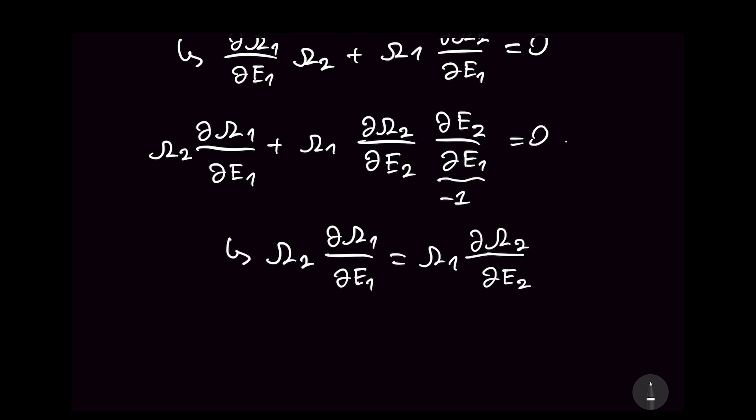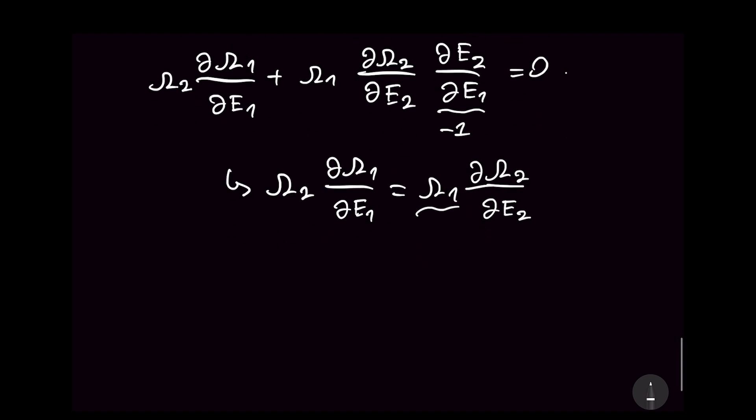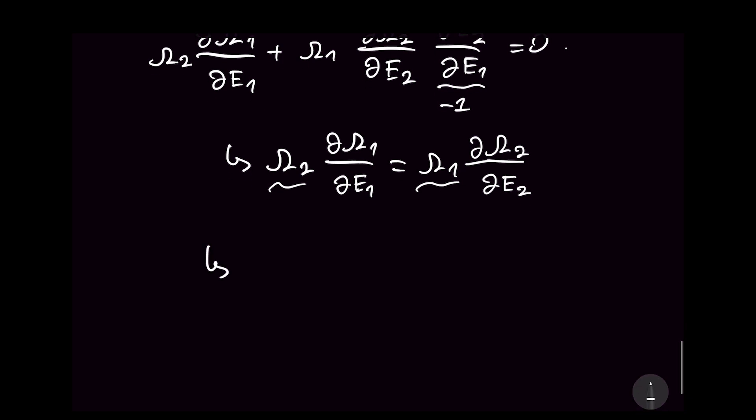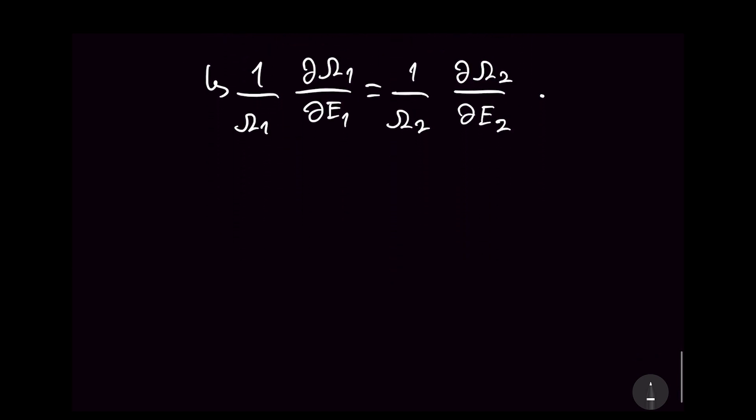Now we can also divide both sides by omega_2. So we can get 1 over omega_1 ∂omega_1/∂E1 equals 1 over omega_2 ∂omega_2/∂E2. And if you know about differential equations, we have just separated the equation so that all the omega_1 E1 stuff are on the left and all the omega_2 E2 stuff are on the right.